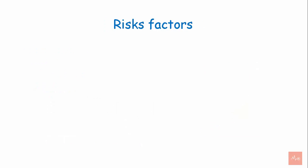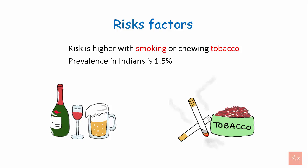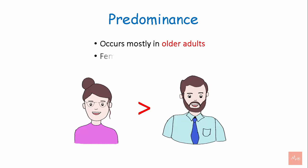Risk factors: Risk is higher with smoking or chewing tobacco. The prevalence in Indians is 1.5%. Lichen planus occurs mostly in older adults. The female to male ratio is 1.5 to 1.